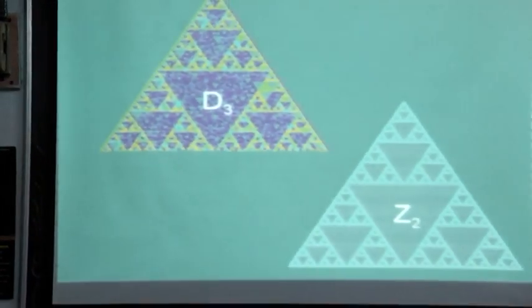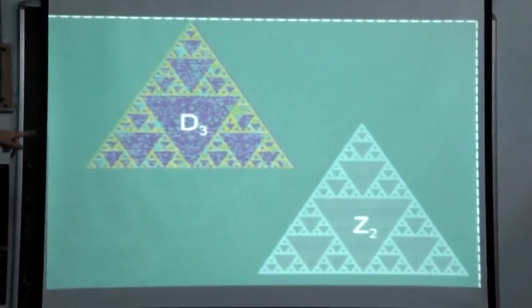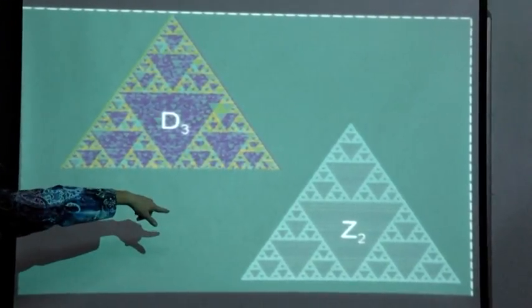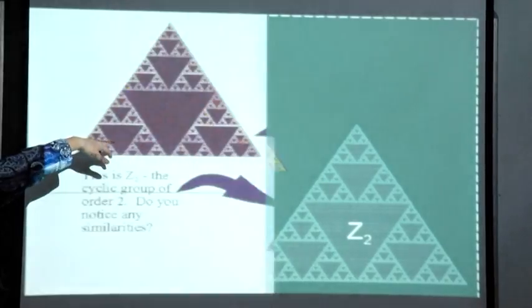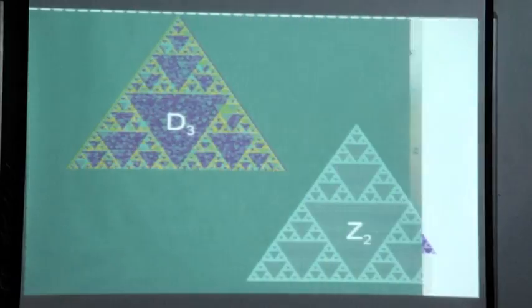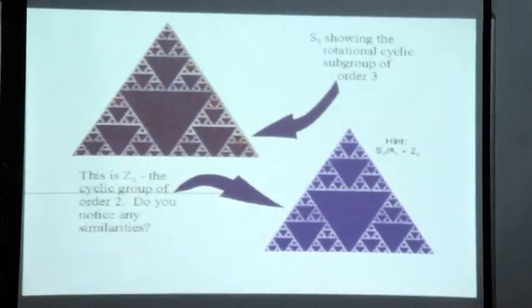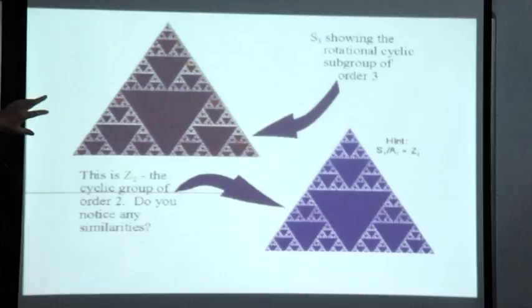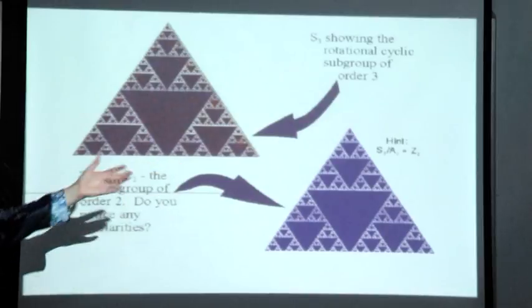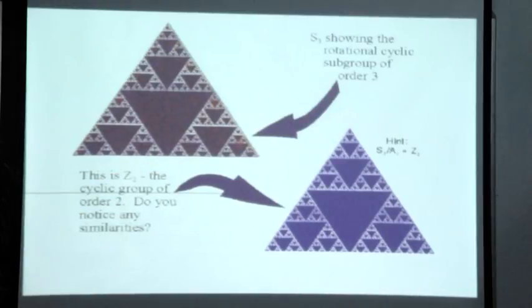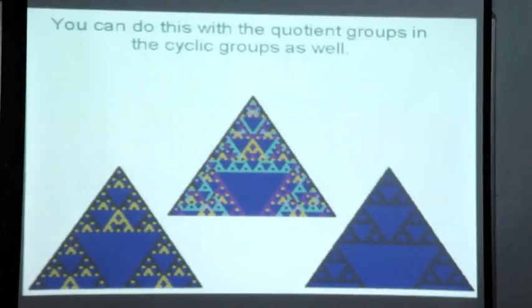The choice of colors has a dramatic effect on what you can visualize, which raises interesting questions about perception. Here's D3 and Z2 — Z2 is a subgroup of D3, and you can see similarities in the patterns.